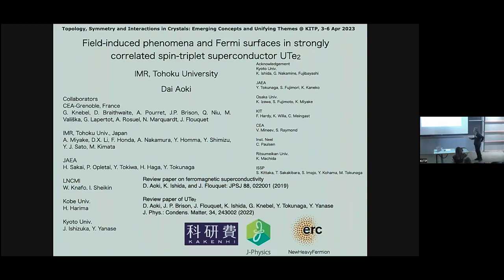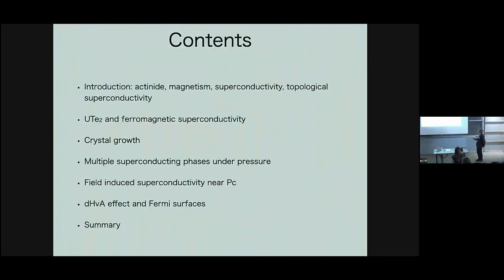This work was done in strong collaboration between CEA-Grenoble in France and the Japanese team. This material is close to the ferromagnetic superconductor — it's a spin-triplet paramagnet and spin-triplet superconductor. If you have interest, you can look at our review paper on ferromagnetic superconductors and the recent review paper on uranium ditelluride. The contents of my talk are: an introduction, uranium ditelluride crystal growth, multiple superconducting phases, and field-induced superconductivity near critical pressure.